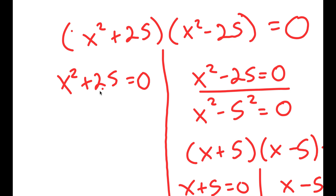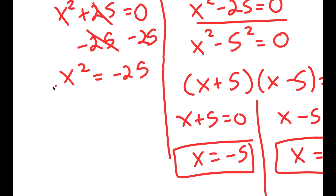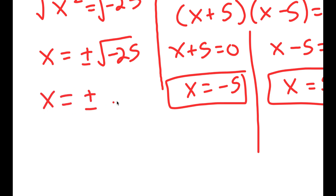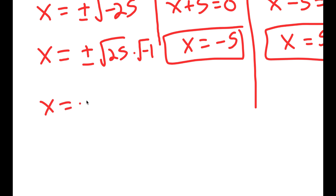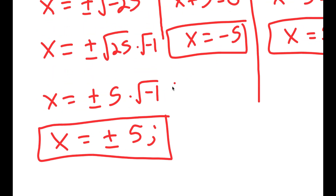Those are two solutions so far. Now we focus on x squared plus 25 equals 0. I'll subtract 25 from both sides to get x squared equals negative 25. Taking the square root of both sides gives x equals positive or negative the square root of negative 25, which equals positive or negative 5 times the square root of negative 1. Since the square root of negative 1 is the imaginary number i, I get x equals positive or negative 5i. So this equation has four solutions in total.